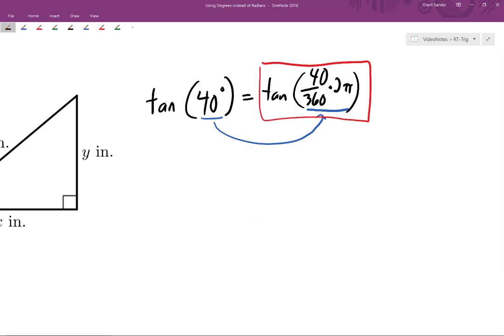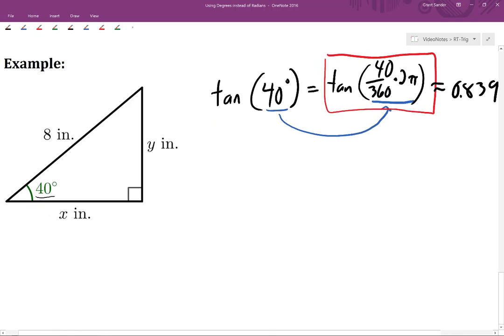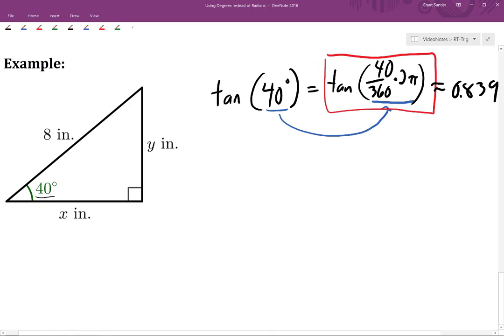In this case, this has a value of about 0.839. So the slope of this right triangle is about 0.839.